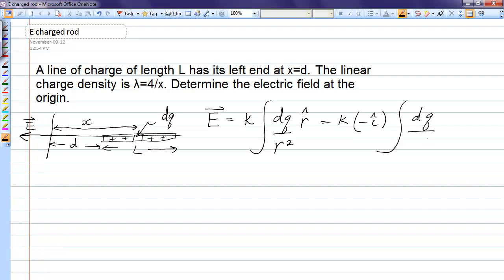And the r, the distance from dq to the point of interest, we can write as x squared. The width of our little dq element will be dx.